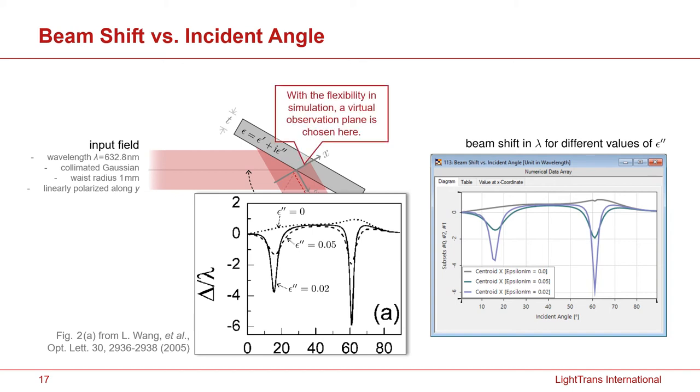In this measurement, we choose, with the flexibility in simulation, a plane which is perpendicular to the direction of the reflection. And we use this coordinate system to measure the shift of the beam center. And that's the result we get on the right side.